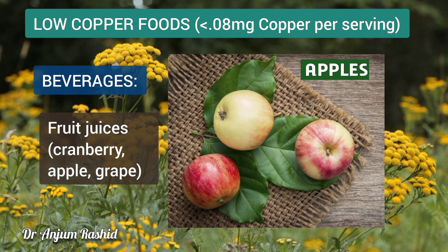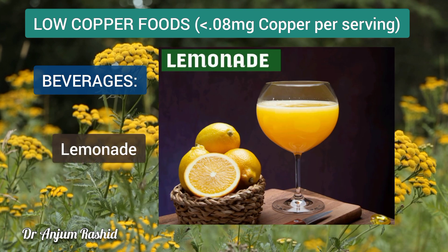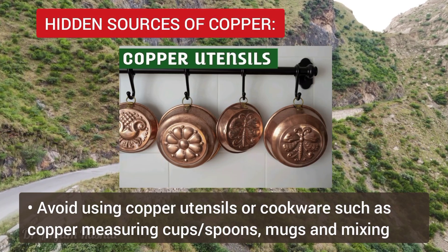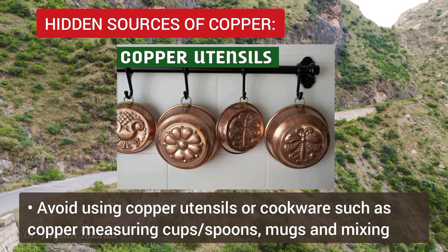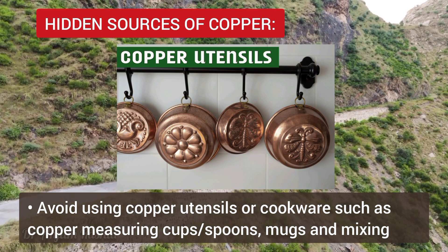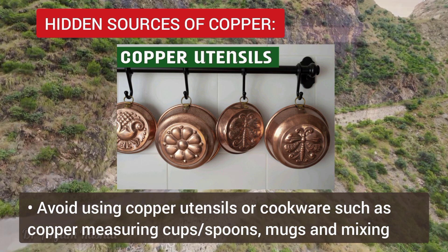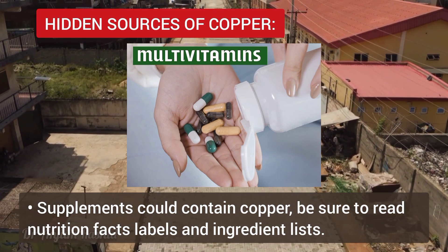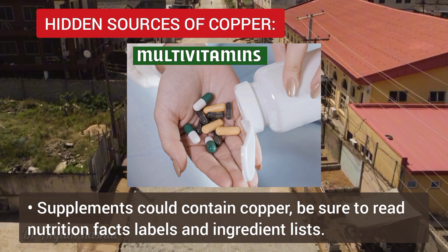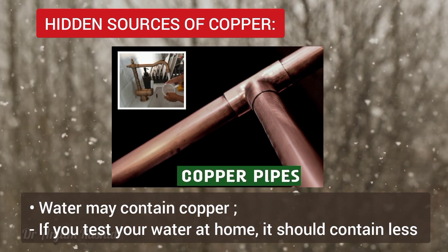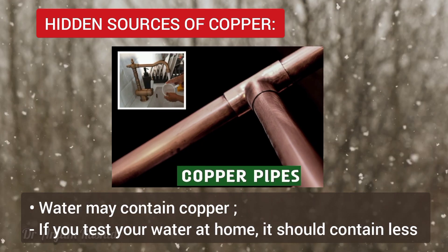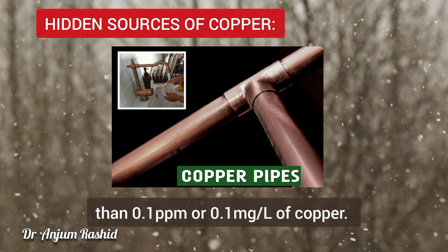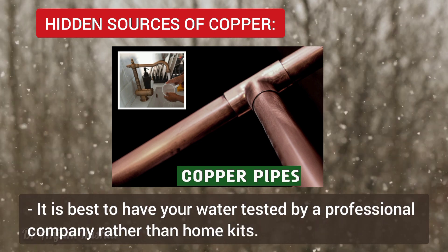There are some hidden sources of copper to keep in mind and avoid. First, copper utensils or cookware such as copper measuring cups, spoons, mugs, and mixing bowls. Second, supplements may contain copper — be sure to read the nutritional labels and ingredient list, as many multivitamins contain copper. Third, water may contain copper; if you test your water at home it should contain less than 0.1 ppm or 0.1 milligrams per liter.